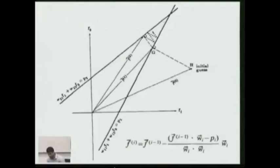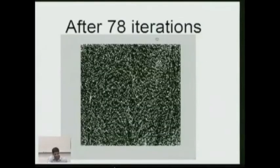Now I implemented this technique, and this is for a case of over 50,000 pixels. And so an iteration consists of one of these projections for each 50,000 pixels, and then starting over again. So after 78 iterations, this is my reconstructed image.